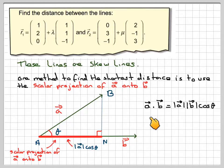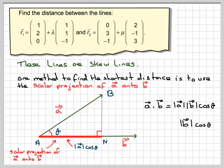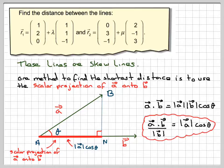From vectors, we know that A dot B equals the magnitude of A times the magnitude of B times the cosine of the angle between them. Rearranging, the magnitude of A cos theta is equal to A dot B over the magnitude of B. This quantity — A dot B over the magnitude of B — is the scalar projection of A onto B, which gives us this distance. So let's go back to our two lines and relate it to the diagram.